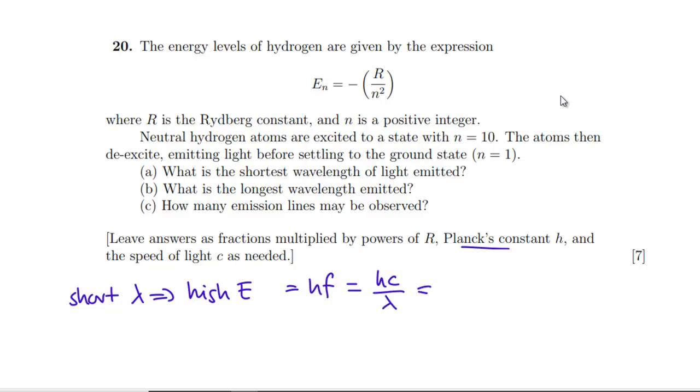So our HF is going to be HC over lambda. So that is going to be equal, if we go from 10 down to 1. So we need the difference between the two of them. So the 1 squared, 1 will become positive. So it's R over 1 squared minus R over 10 squared. So we got R minus a hundredth of R. So that's 99R over 100. So we want the wavelength. So the wavelength is going to be 100HC divided by 99R.